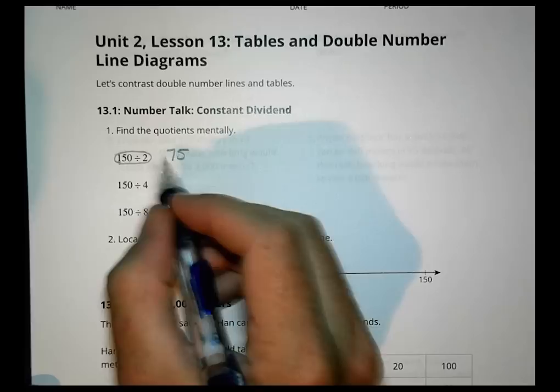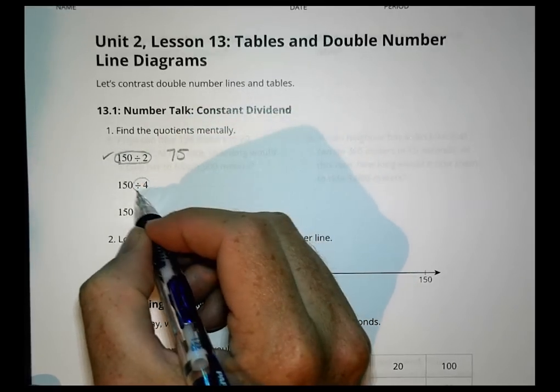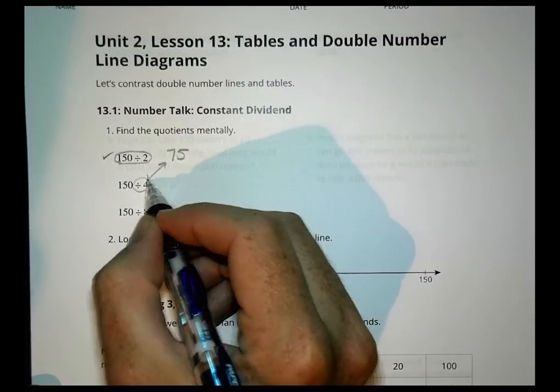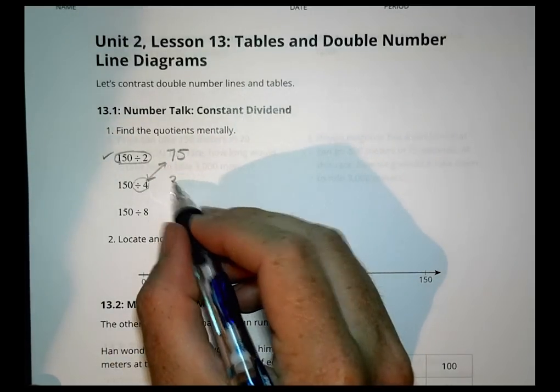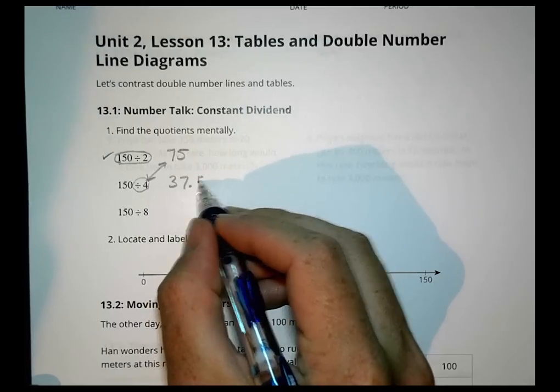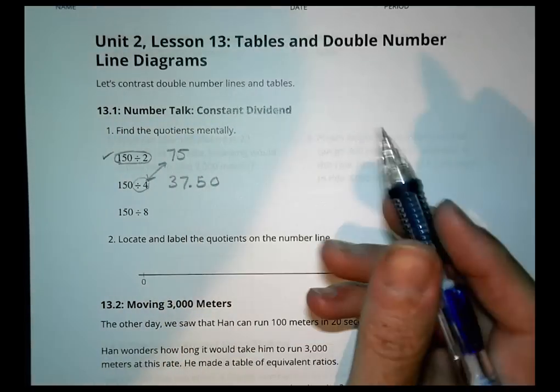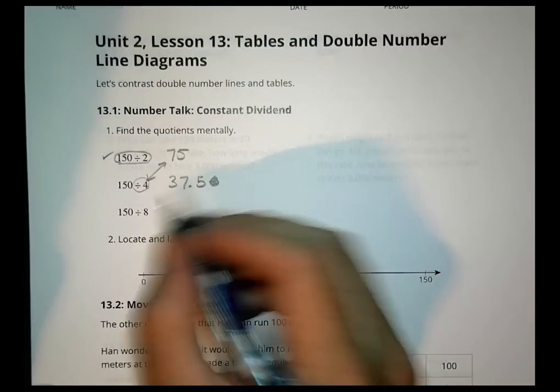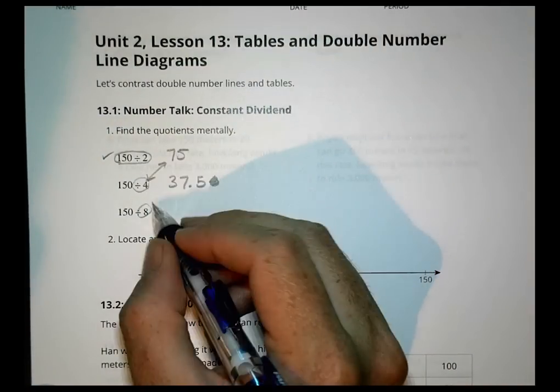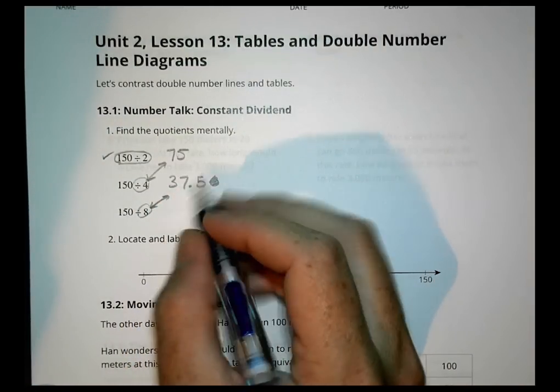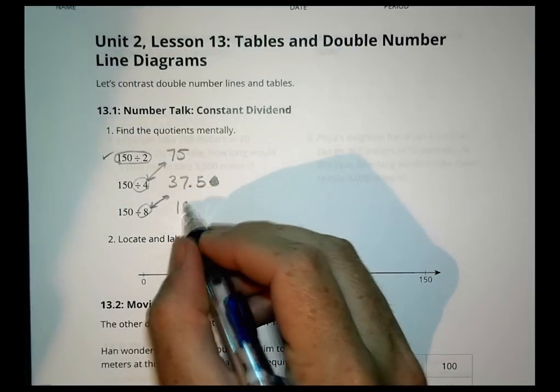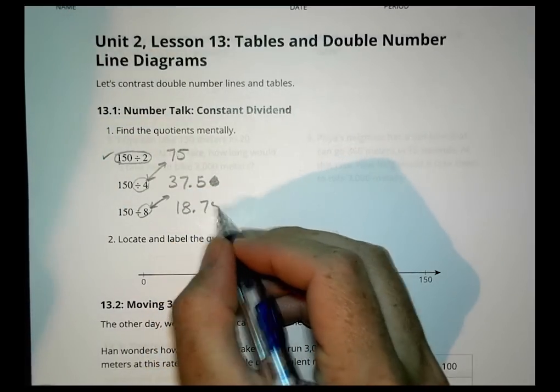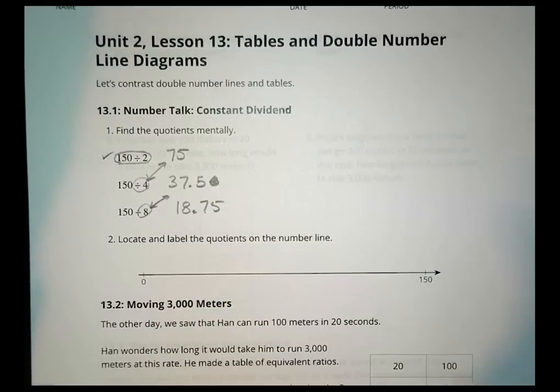That's how I get that one mentally. When dividing by 4, that means I'm going to cut this in half again, which is a little trickier to do as mental math. I know with some practice that it's 37.5. If I'm dividing by 8, then I'm cutting this in half again. Half of 37.50 becomes 18.75. Those are some weird numbers, but it does work out.